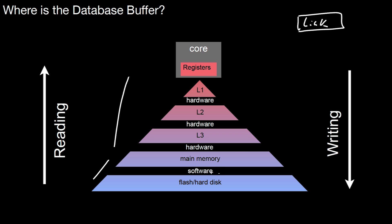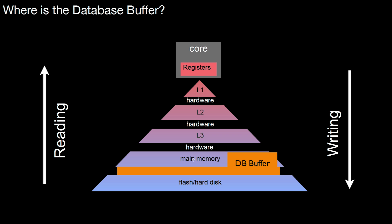Let's start with the software. What does the database do? In between main memory and flash disk, there's the database buffer, which takes care of the process of reading and writing. The database buffer allocates some memory — it has some share of the available DRAM of main memory — but it controls how the transfer is done. It controls the data exchange among those layers, and whenever anything goes on there, the database buffer takes over control.